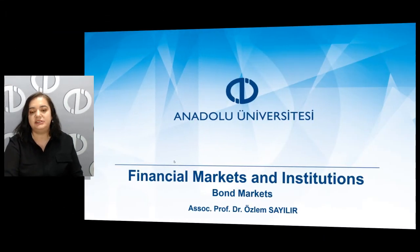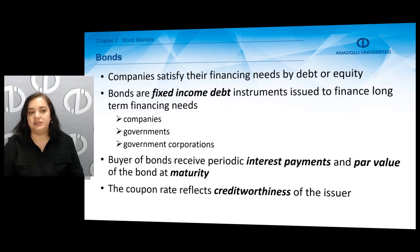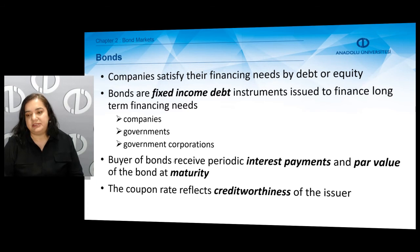Hello again. Now we're going to review the second chapter of financial markets and institutions, which is about bond markets. Let's define bonds. Companies may satisfy their financing needs either by issuing debt or equity instruments. Bonds are fixed income debt instruments issued to finance long-term financing needs of companies, governments, or government corporations. A buyer of bonds receives periodic interest payments and par value — also called nominal value — of the bond at maturity. We call these periodic interest payments coupon payments.